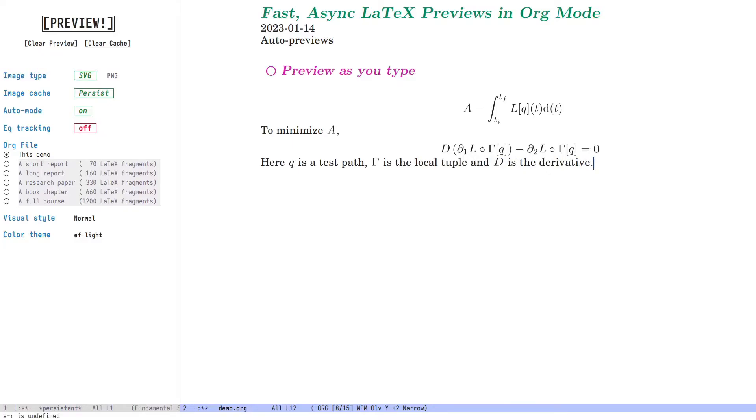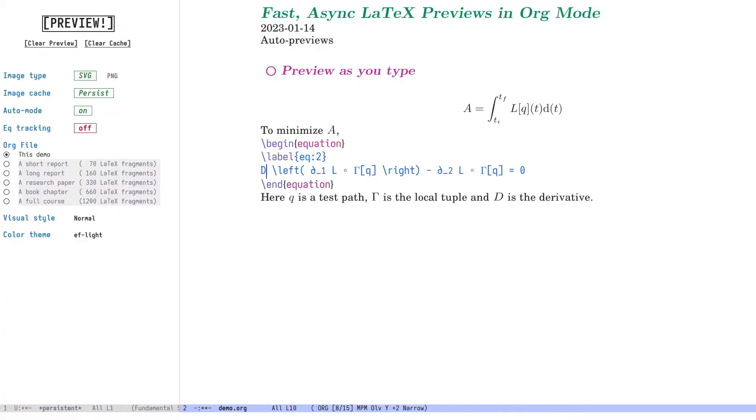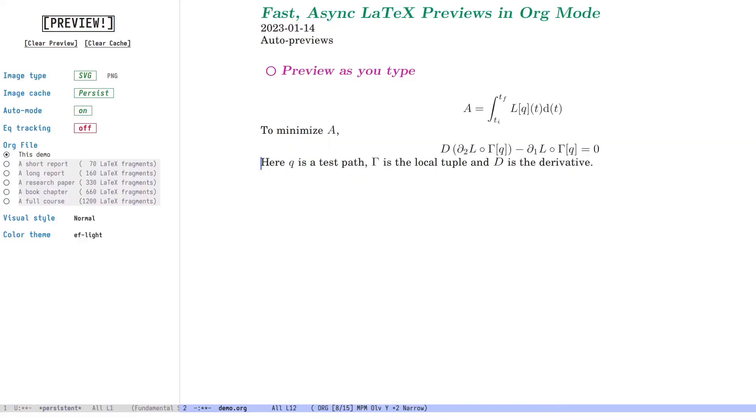Because this is asynchronous, I didn't have the annoying one second freeze when a preview is auto-generated that you do, for example, with packages like org-fragtog. Fragments are also auto-regenerated if you edit them. So, I noticed that I made a mistake here and I swapped the one and the two on the partial derivatives. So let's fix that. And you can see that that took care of itself.